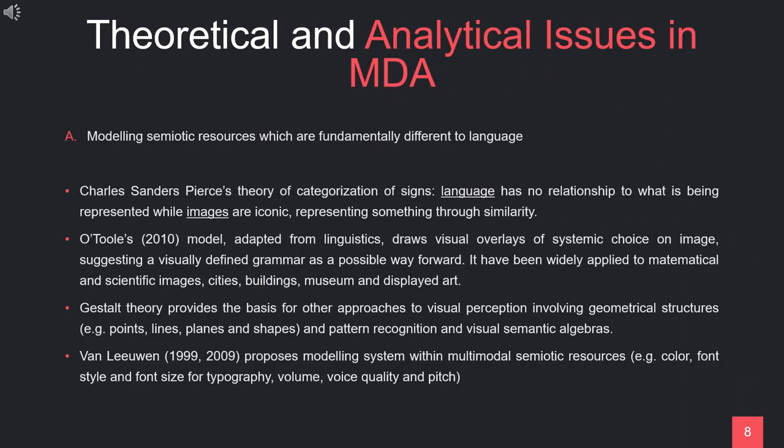Theoretical and analytical issues in multimodal discourse analysis include three things. The first one is modeling semiotic resources which are fundamentally different to language. Based on Halliday, language can be modeled as sets of interrelated systems in the form of system networks. The grammatical systems of language link word to meaning on the semantic level. According to Gestalt laws of organization, images are perceived as organized patterns in relation to the whole, made up of interrelated patterns forming one complete shape, which in some way is similar to the way language works. Therefore, like language, images have grammar structures that can be analyzed for meaning.